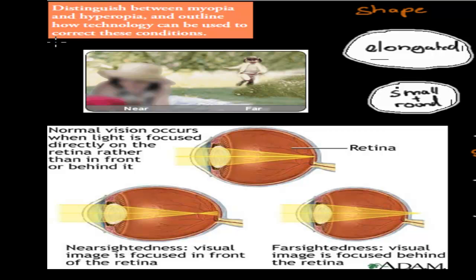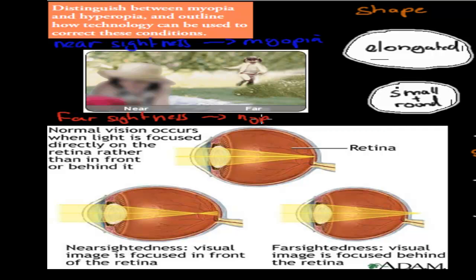In this video, we're going to talk about two conditions called nearsightedness, or myopia, and farsightedness, or hyperopia. We are going to compare them — the point says distinguish — which means we need to tell the difference between myopia and hyperopia, and also outline how technology can be used to correct these conditions.